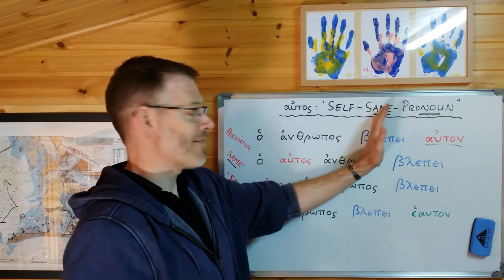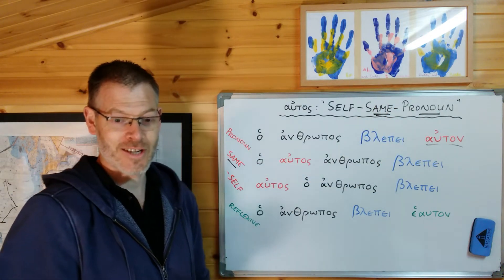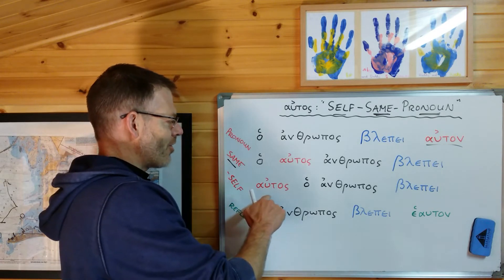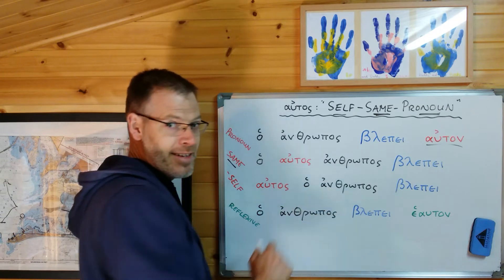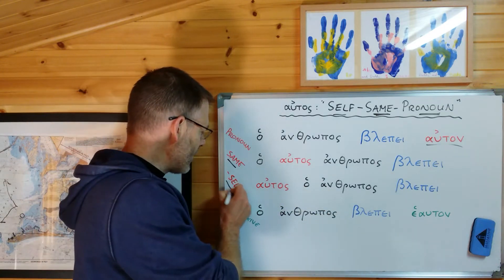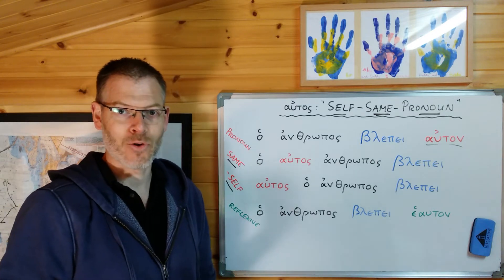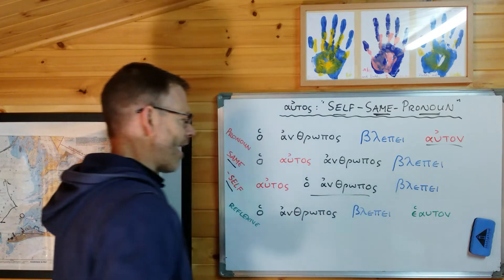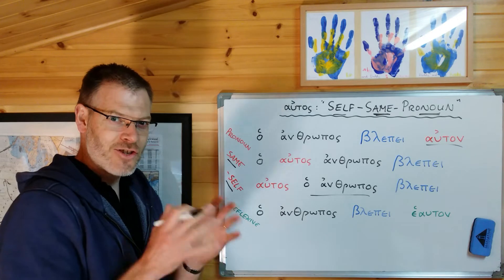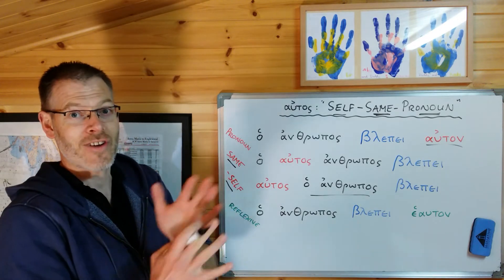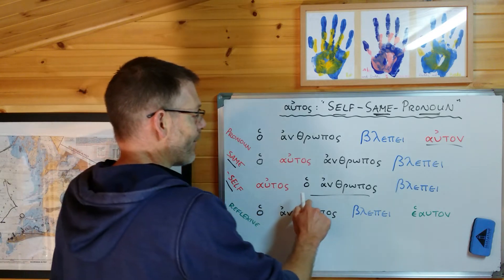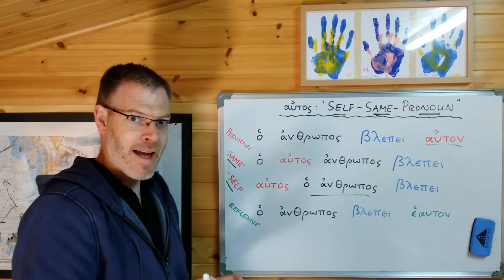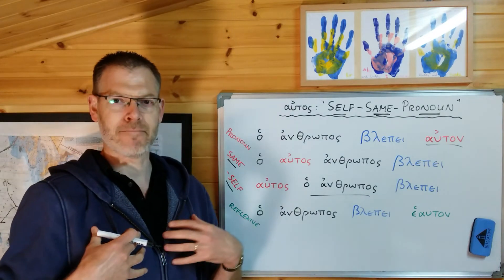We've now looked at the pronoun and same usages of autos. What's the third usage that Duff highlights? It is the so-called emphatic use. When the pronoun autos appears before the article and its noun, it means himself, herself, itself, or if plural, themselves — emphasizing the subject. So 'autos hot anthropos': translated woodenly it would be 'himself the man sees', but of course in English we'd say 'the man himself sees'. It's emphasizing it's the man as opposed to somebody else.